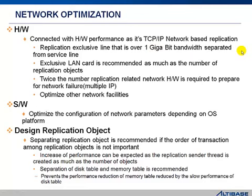We also recommend the number of LAN cards matching the number of replication objects to improve performance. When multiple LAN cards are used, the replication objects can be used according to that number, so the sender load per LAN card is reduced and replication performance is improved. A number of exclusive LAN cards are recommended so that replication stop will not occur due to network failure, with multiple IP addresses available.